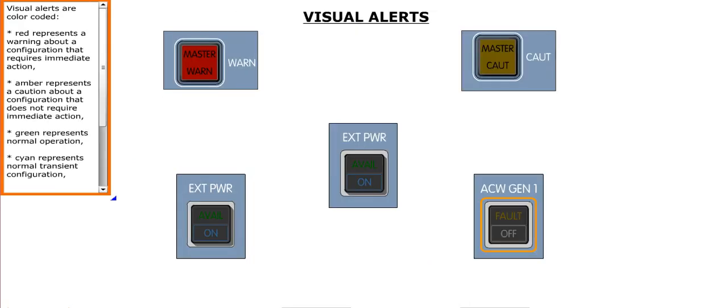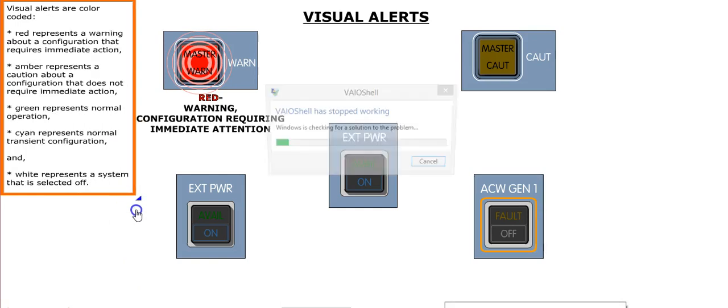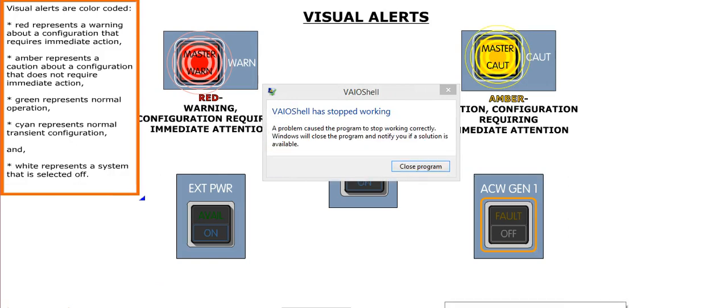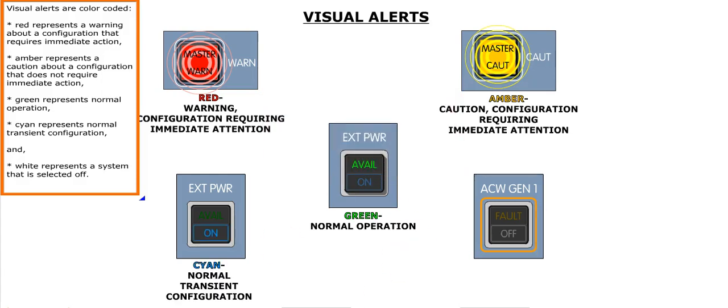Visual alerts are color-coded. Red represents a warning about a configuration that requires immediate action. Amber represents a caution about a configuration that does not require immediate action. Green represents normal operation. Cyan represents normal transient configuration, and white represents a system that is selected off.